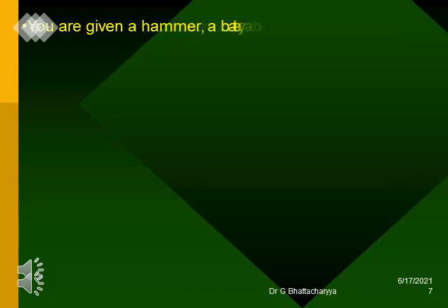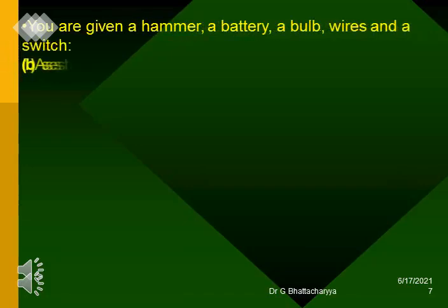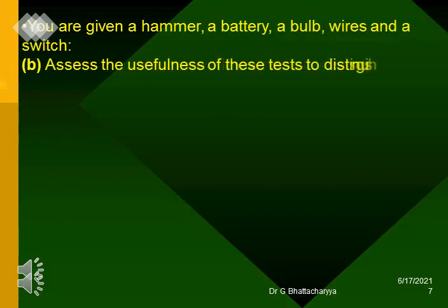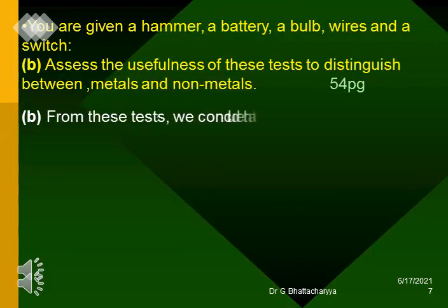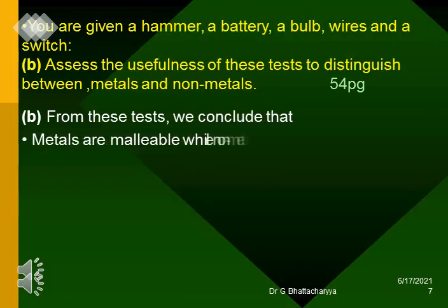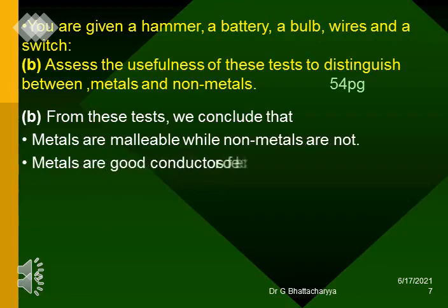B. Assess the usefulness of these tests to distinguish between metals and non-metals. From these tests, we conclude that metals are malleable while non-metals are not. Metals are good conductors of electricity while non-metals are not. Note: Graphite is an exception.